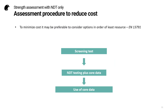When it comes to assessing the compressive strength class in case of doubt, EN 13791 recommends the following sequence to reduce cost. The first step is to do the screening test — a pure NDT test, very cheap to perform — and if the concrete already passes at this stage, then great. If not, you can go on to use NDT testing plus core data, since you already have the NDT information and only need to take a few cores. If this fails, you can then go on to use more extensive core data.